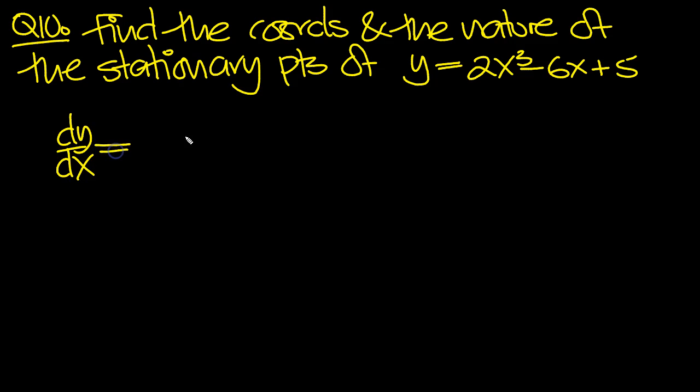So dy/dx is the gradient function. Power rule: 3 comes down, 3 times 2 is 6, x to the 1 less than 3, which is 2. X differentiates to 1 and there's minus 6 lots of it. And the constant goes to 0.